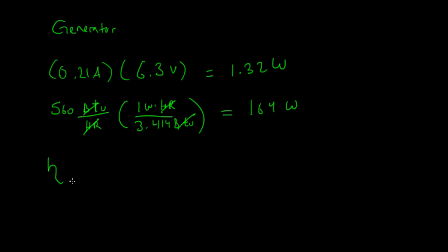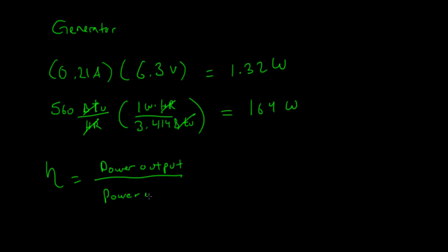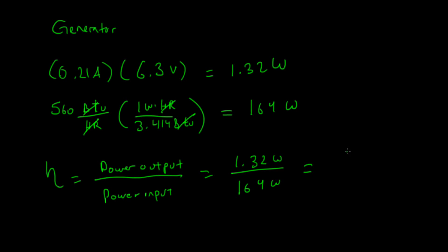Now we find the efficiency of the generator: power output over power input, which is 1.32 watts divided by 164 watts. This gives an efficiency of 0.8%. That's the efficiency of the generator.